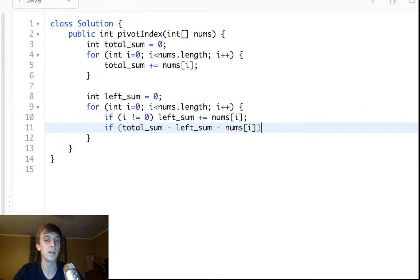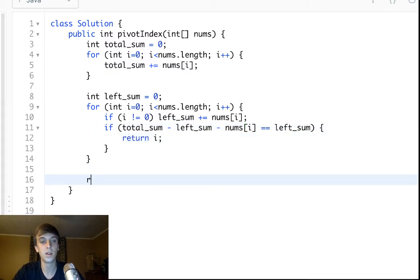If it doesn't count for either, is equal to the left sum, that means they're the same. If right sum is equal, this is the formula for right sum is equal to left sum and we exclude the pivot, then we return the index we're at because we found the pivot.